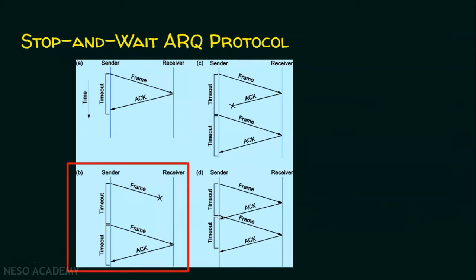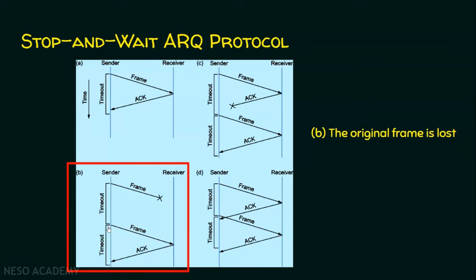In scenario B, the sender is sending a frame but this frame is lost — the original frame is lost. The sender has sent the frame and it has not been received by the receiver, so obviously the receiver will not send any acknowledgement. The timeout expires, and the sender retransmits the frame again. The acknowledgement for the retransmitted frame is received before the timer expires. This process is automatic, and this is how stop and wait ARQ differs from stop and wait protocol.